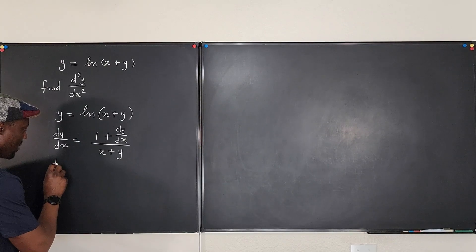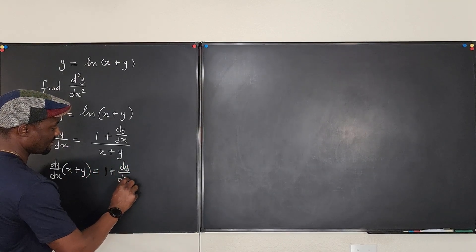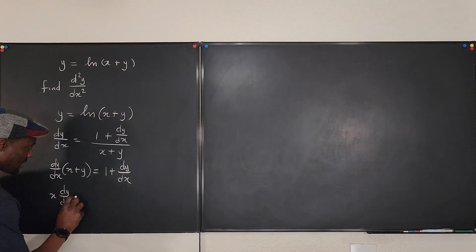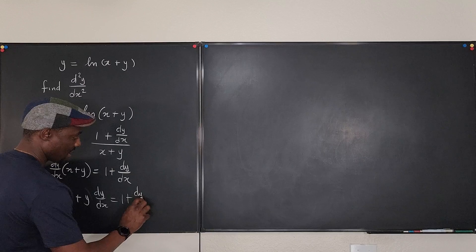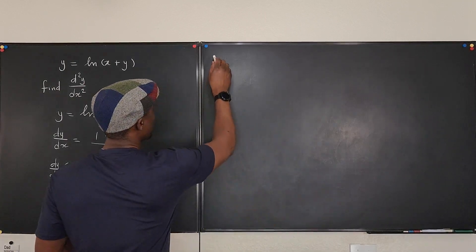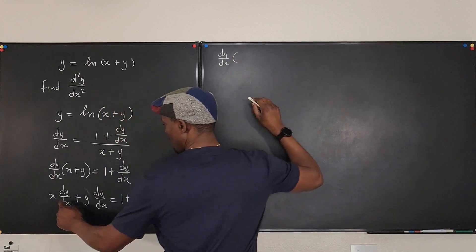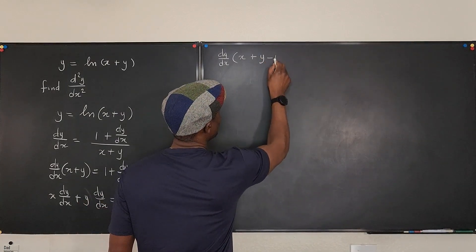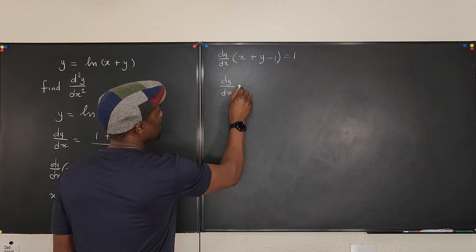So dy/dx times (x plus y) equals one plus dy/dx. Distributing gives x·(dy/dx) plus y·(dy/dx) equals one plus dy/dx. Collecting all dy/dx terms on one side: dy/dx times (x plus y minus one) equals one, which implies dy/dx equals one over (x plus y minus one).